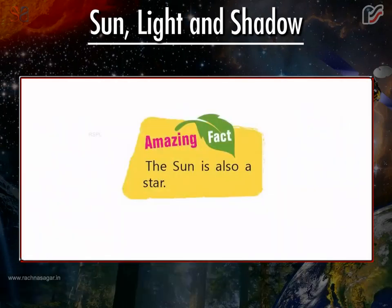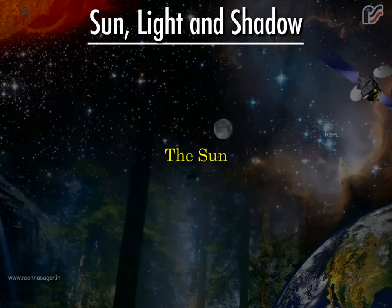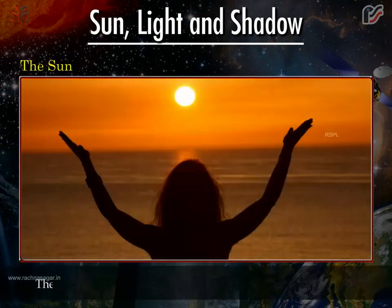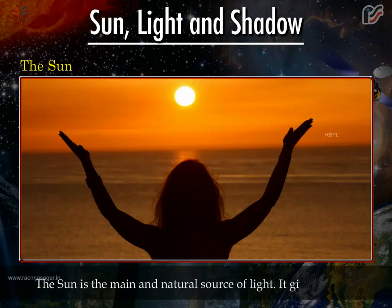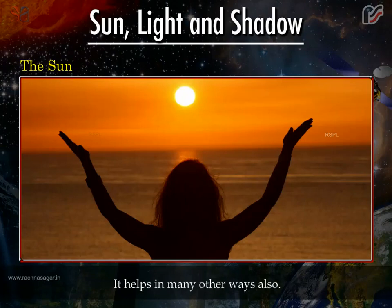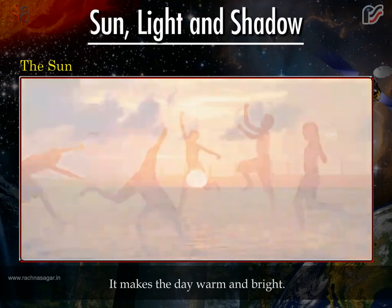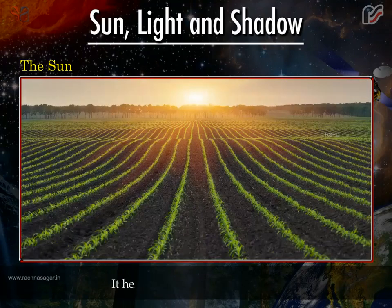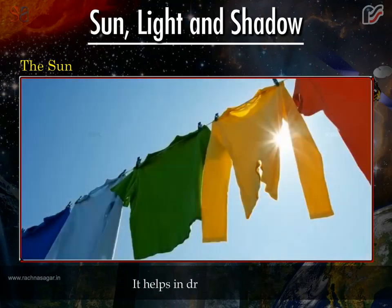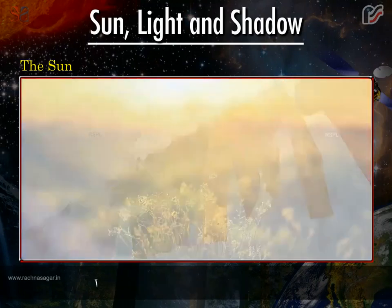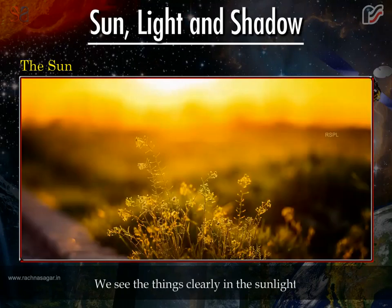Amazing fact: the sun is also a star. The sun is the main and natural source of light. It gives us heat and helps in many other ways also. It makes the day warm and bright. It helps to form clouds. It helps plants to make their food. It helps in drying clothes. We see things clearly in the sunlight.